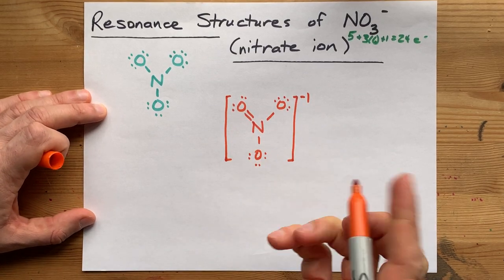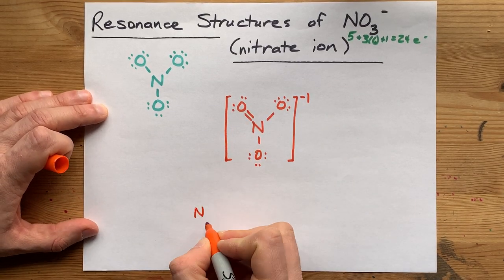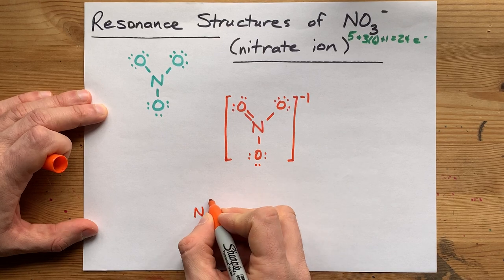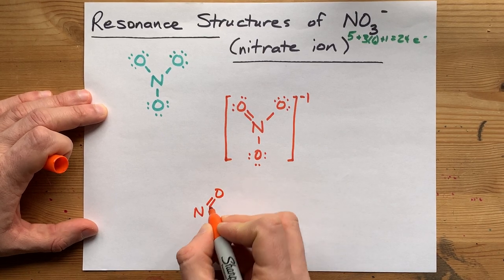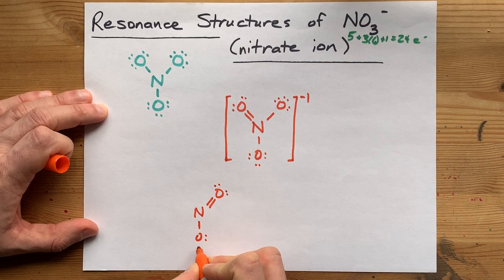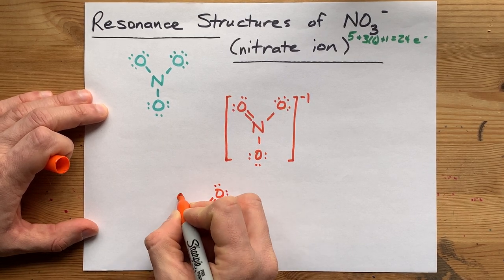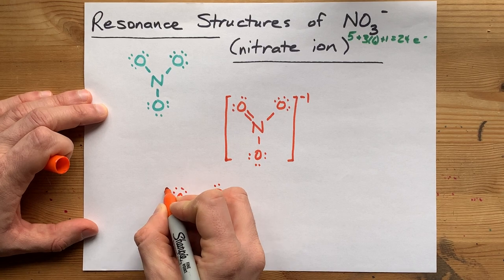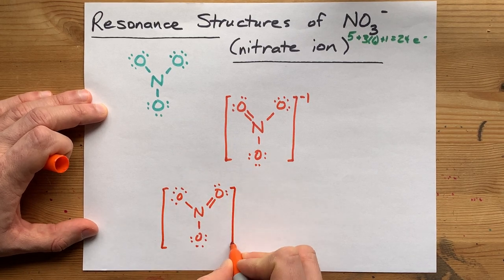And each of these structures separately will be called a resonance structure. We could have just as easily made a double bond with the oxygen in the top right. That one's double bonded, the rest of these are single. I'm going to give this a minus one charge as well.